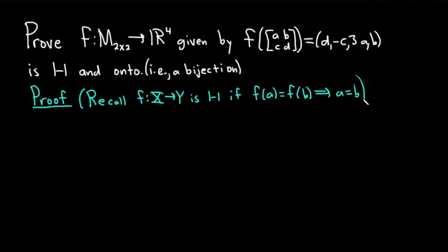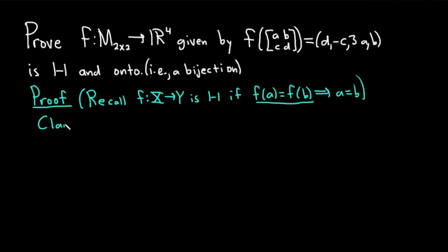This has to hold for all a, b in X. Whenever you have f(a) = f(b), then a = b. That's what we have to show. In this problem, we'll start by assuming that f(a) = f(b) and show that a equals b. So first: claim f is 1 to 1.